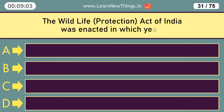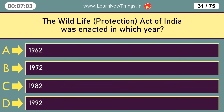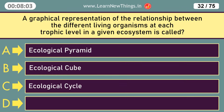The Wildlife Protection Act of India was enacted in which year? 1972. A graphical representation of the relationship between the different living organisms at each trophic level in a given ecosystem is called an Ecological Pyramid.